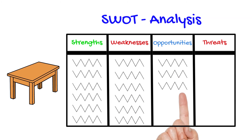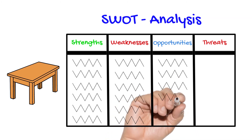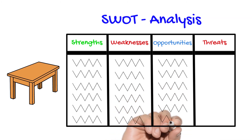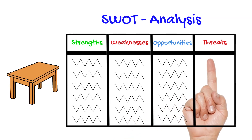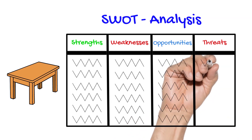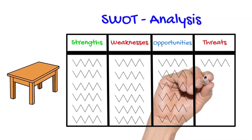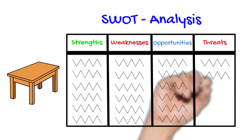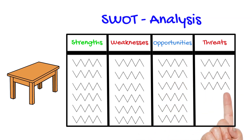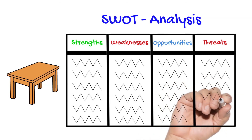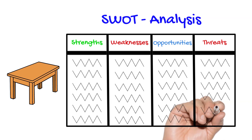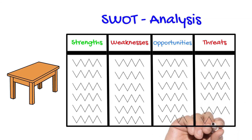A SWOT analysis is a very similar tool to the PMI, except it allows you to go into a little bit more depth. It would be used in the develop phase when you've already narrowed down a range of suitable ideas but really just want to refine and ensure you choose the most suitable outcome. The SWOT analysis is a good convergent thinking strategy that'll help you do that.